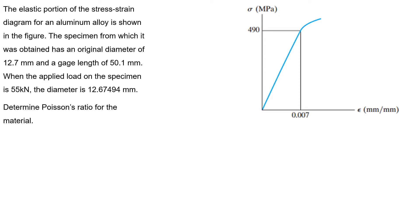When the applied load on the specimen is 55 kN, the diameter is 12.67494 mm. Determine the Poisson's ratio for the material.